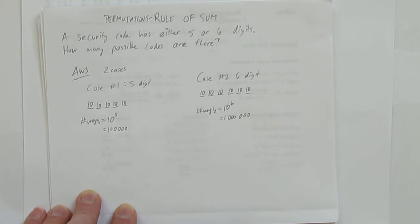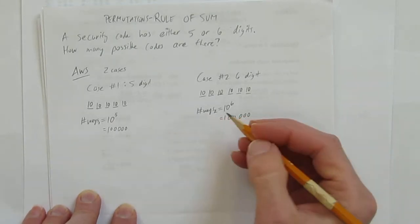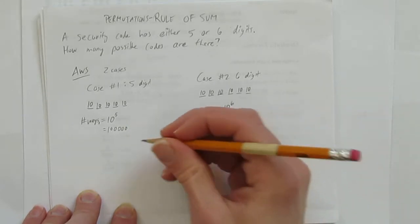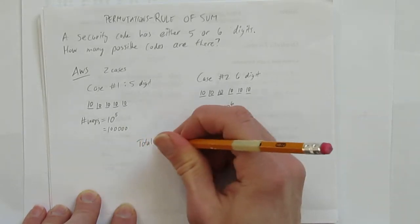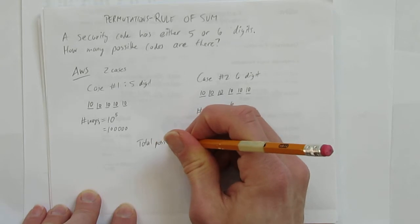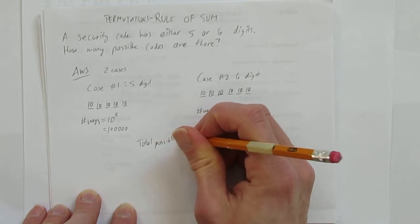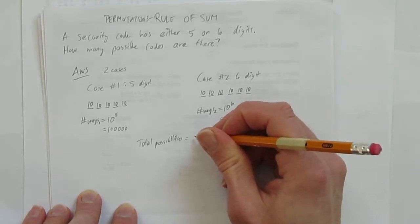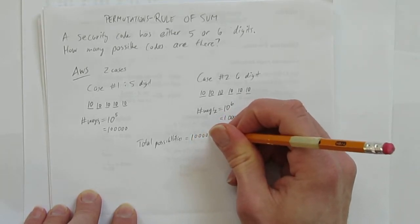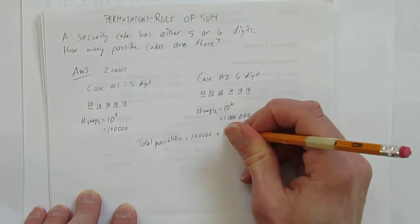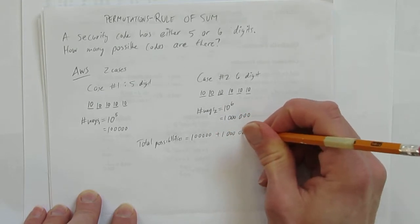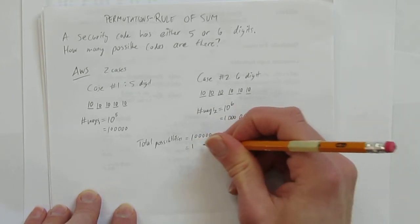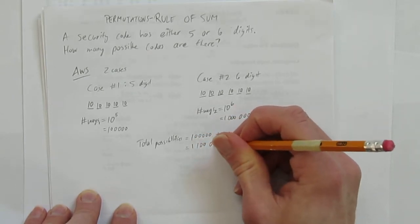The rule of sum says you add these two cases together. You either have a five-digit code or a six-digit code, so your total number of possibilities is the sum — and that's what the rule of sum is about: adding your cases together. You have a hundred thousand five-digit codes and a million six-digit codes, which when added together is one million, one hundred thousand.